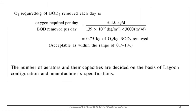We calculate oxygen required per day divided by BOD removed per day: 311 kg/day divided by BOD removed per day. This gives 0.75 kg O₂ per kg BOD5 removed. The acceptable limit is 0.7 to 1.4 kg, so this value falls within the acceptable range. We then consider aeration capacity, power, and configuration for the aerated lagoon design.